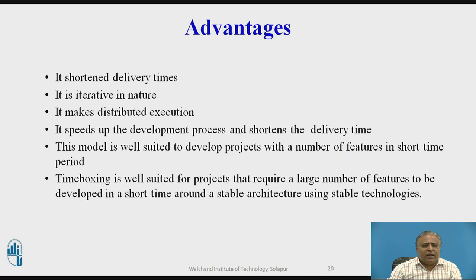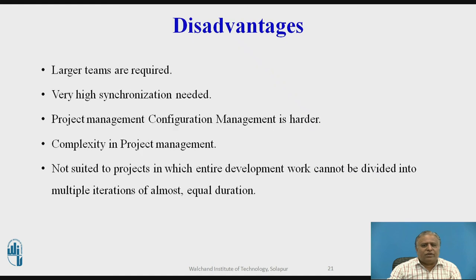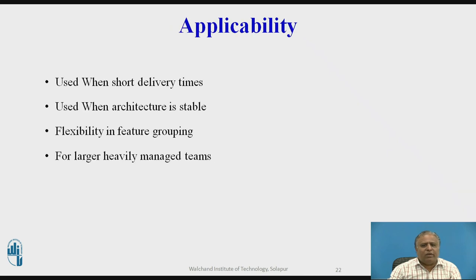Advantages of the time boxing model: it provides short-term delivery times, has an iterative nature, enables distributed execution, and speeds up the development process. It is well suited for projects requiring a large number of features to be developed in a short time around a stable architecture using stable technologies. Disadvantages: larger teams are required with high synchronization needed; project and configuration management become harder; and it is not suited to projects where development work cannot be divided into multiple iterations of almost equal duration. Applicability: used when short delivery times are needed, when architecture is stable, when there is flexibility in feature grouping, and for larger, heavily managed teams.